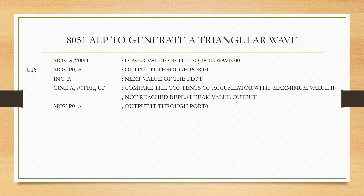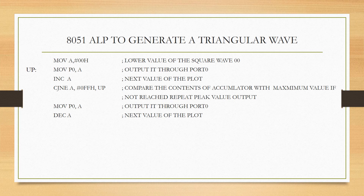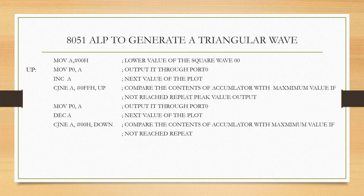Next, I am supposed to put out this value FFH as well. For that reason, I am going to move the content of the accumulator through Port 0. Once this is done, my next task is to generate the downhill. For that reason, I am going to decrement the value of A. The content of the accumulator till now was FFH; now I have decremented it, so FFH becomes FE. The accumulator contains FE now, and I am generating the downhill. The lowest peak in the downhill is 00, so I am going to compare the content of the accumulator with 00.